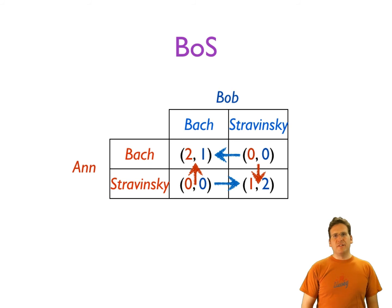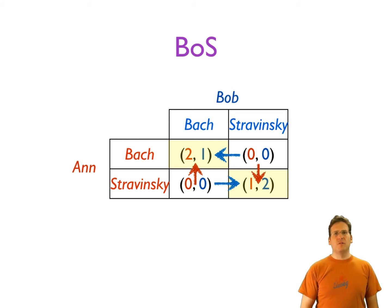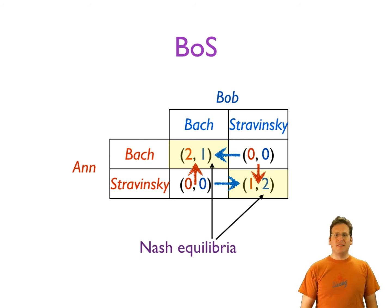Both going to Stravinsky is a stable outcome: neither would want to unilaterally change their choice. That is the very definition of Nash equilibrium — an outcome where no player would want to unilaterally deviate, meaning each player, given what the others do, wants to stick with their choice. Are there other outcomes like that? Yes — if they both go to the Bach concert, neither would want to change given that the other is going to Bach. So this game has two Nash equilibria: Bach-Bach and Stravinsky-Stravinsky.